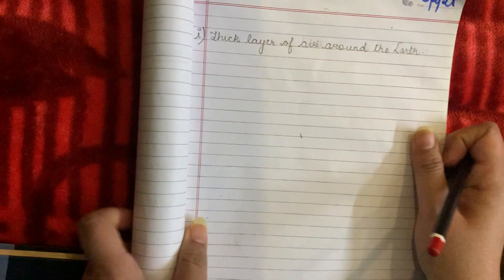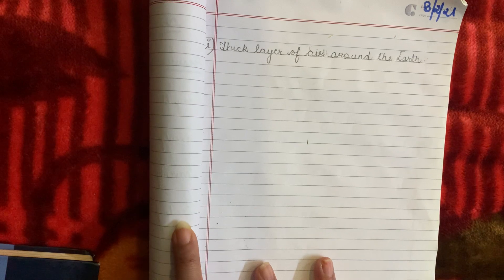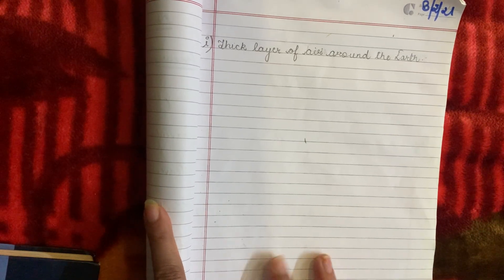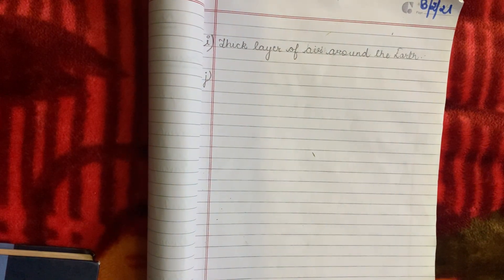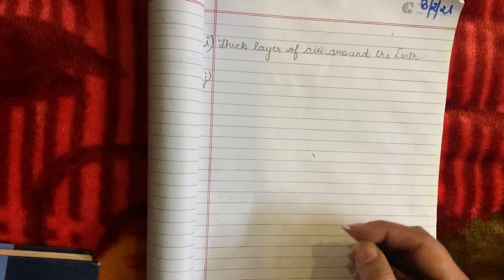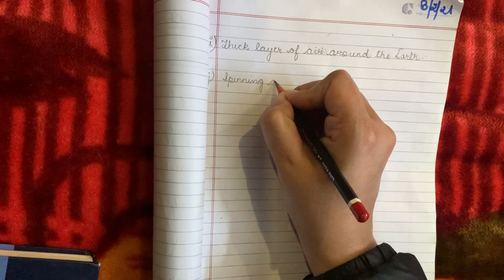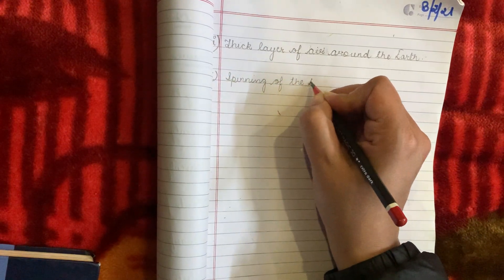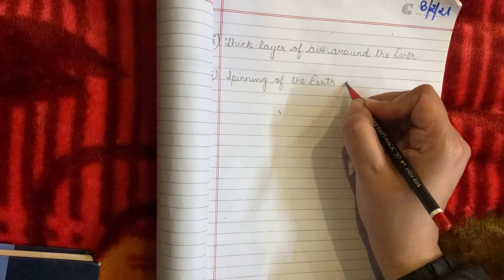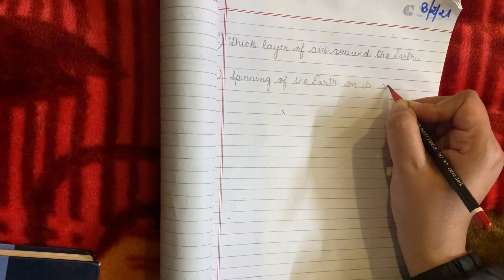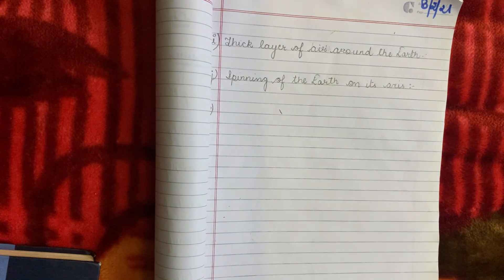Note it down. Use cursive handwriting. Sharpen pencil. Leave two lines — one for the answer and one other than that. Spinning of the earth on its axis.